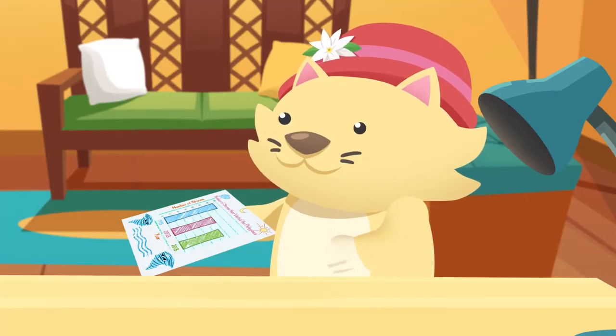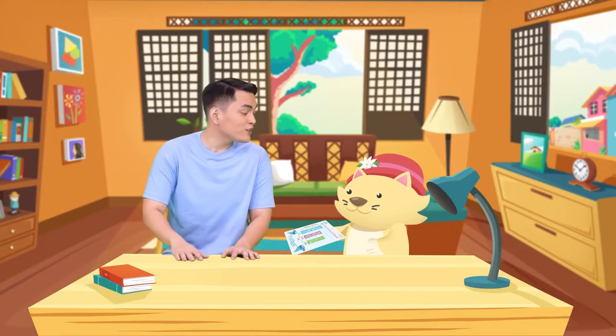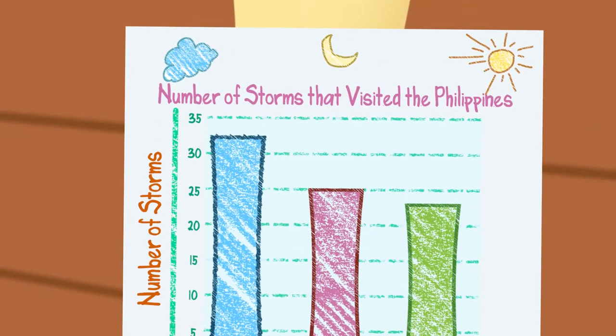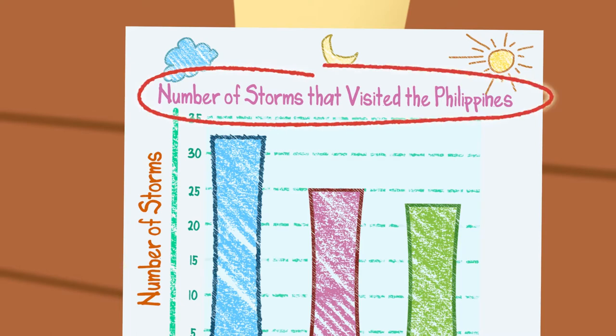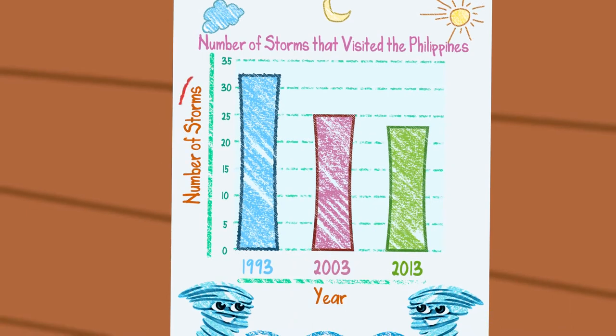Why does it use bars? Well, so that it's easier to understand, especially when comparing numbers. 'Number of storms that visited the Philippines.' That's the title. They have titles, like books? Mm-hmm, so you can easily understand what they're about. So this is about storms that hit our country.